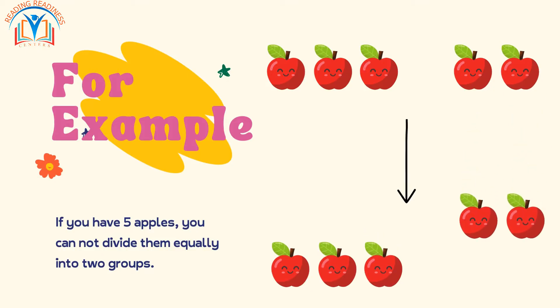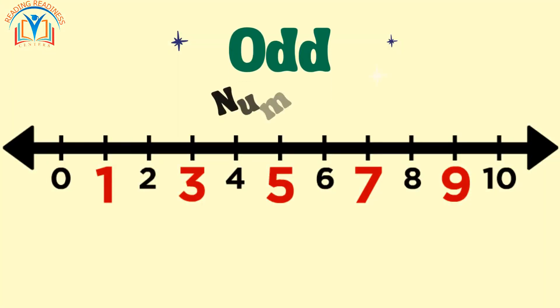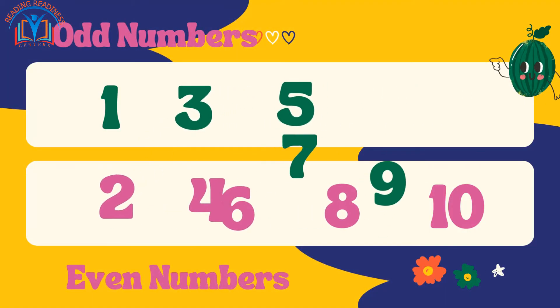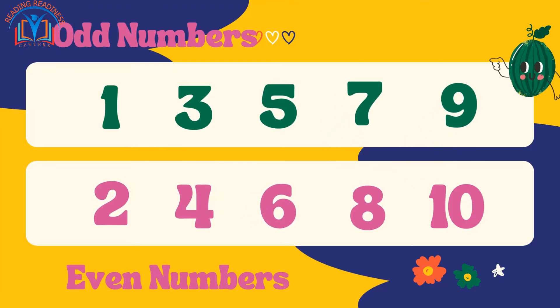For example, if you have five apples, you cannot divide them equally into two groups, so five is an odd number. When you count by ones, odd numbers are the ones that come between even numbers. For example, if you count from one to ten, the odd numbers are one, three, five, seven, and nine.